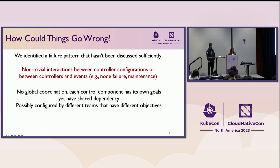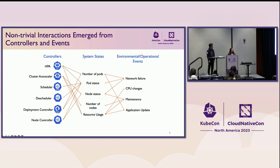This is really because those controllers do not have global operations. Each control component has its own goals, however they share dependencies. They are possibly controlled by different teams — for example, the infrastructure team or application development team — and they may not have the same objective. This picture illustrates how non-trivial these interactions can be. On the left-hand side is a subset of controllers interacting with each other and also with events on the right-hand side by manipulating the system in the middle. This really shows you how complex this could be.